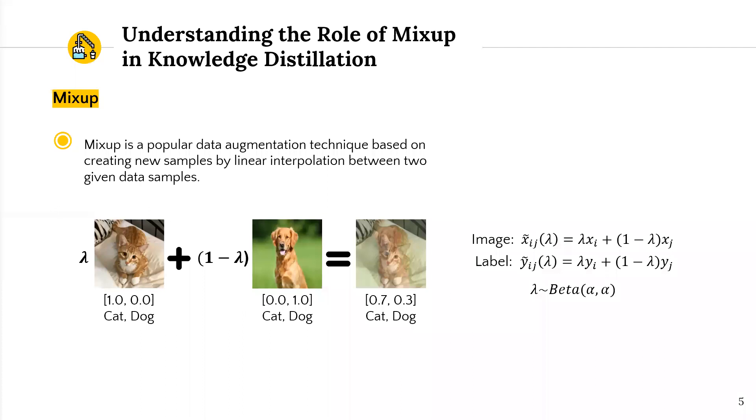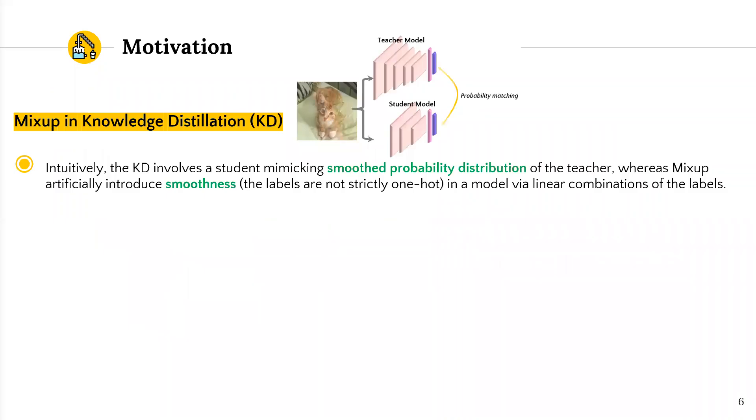To understand the inner working of the network, we bring mix-up into the knowledge distillation framework. I found that there is a connecting link between mix-up and distillation. Mix-up is a popular data augmentation technique to create new training data by linearly combining two images and labels. Let me give you the connection between these two methods.